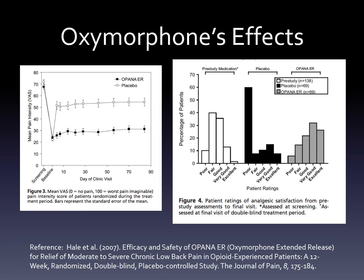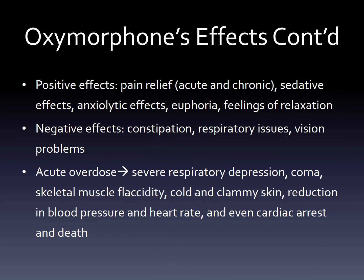As seen in the graph on the left, patients' pain ratings did not waver greatly while they were on Opana, but were much higher for patients receiving the placebo. Patients also reported more favorable ratings of Opana than their previous opioid medication. Some other favorable effects of oxymorphone included sedative and anxiolytic effects. The drug is sometimes administered before surgery to sedate and relieve anxiety. It can also produce feelings of euphoria and relaxation. Negative effects include constipation, respiratory issues, and vision problems.